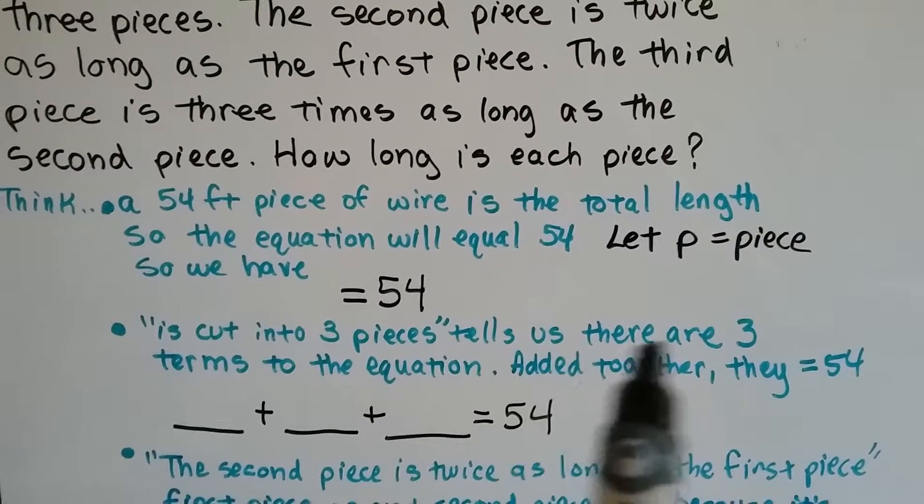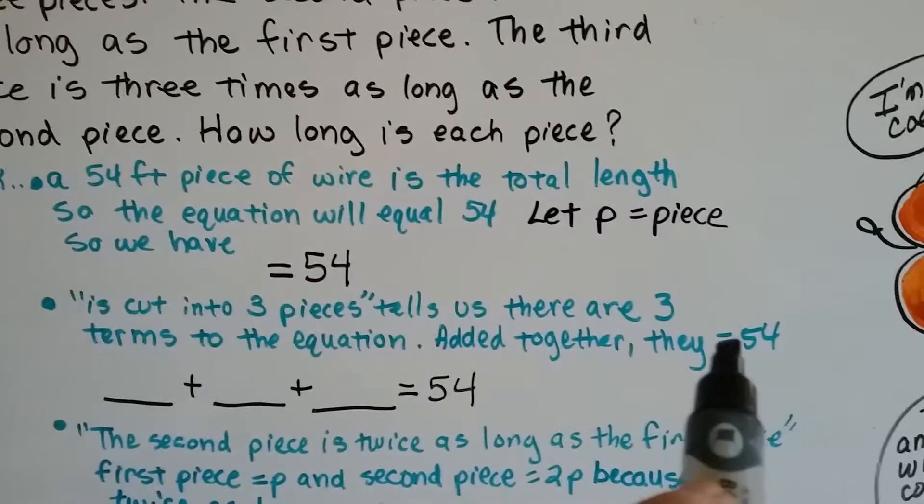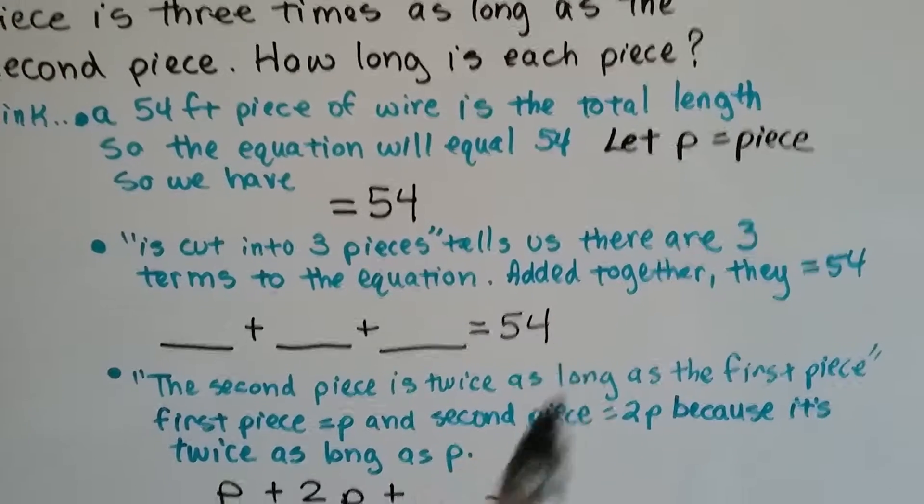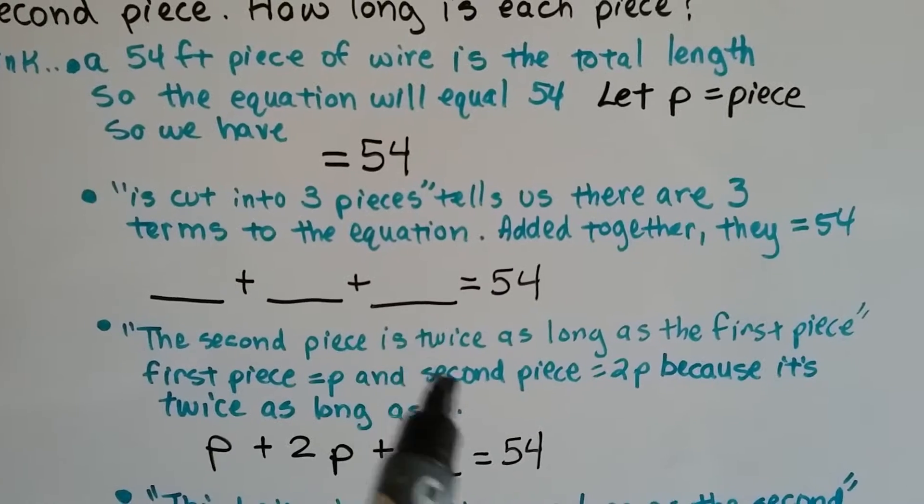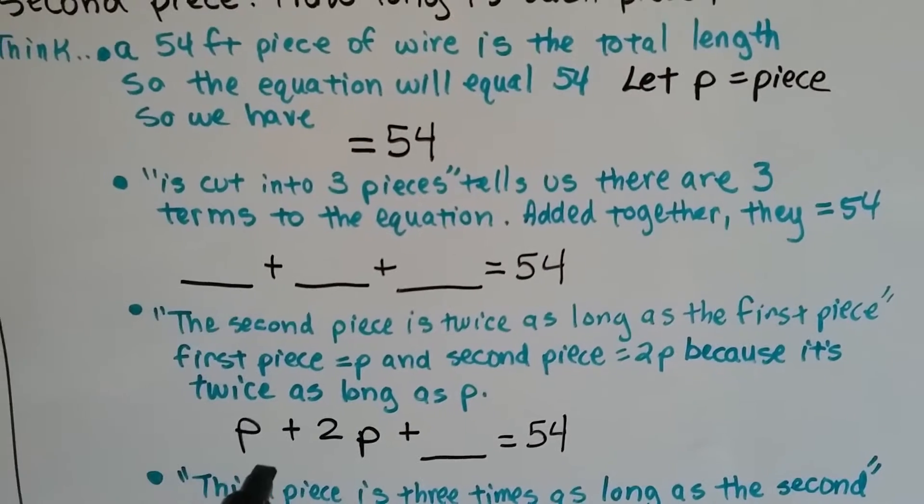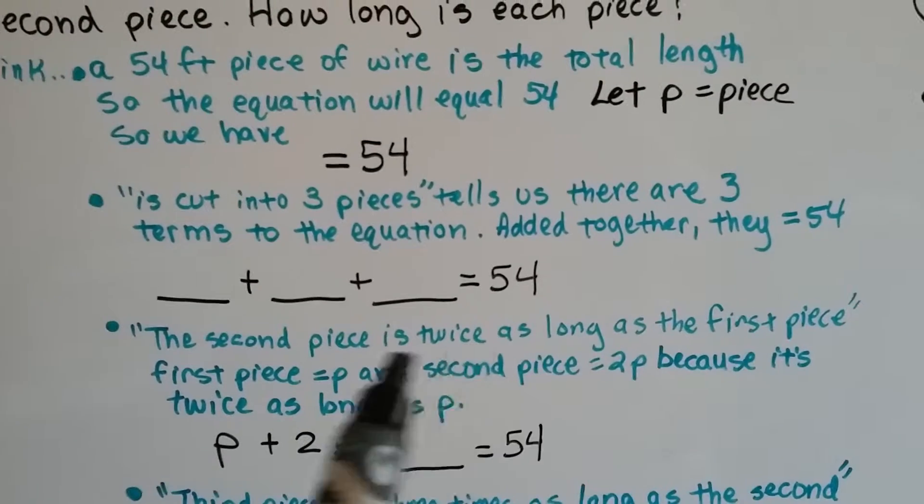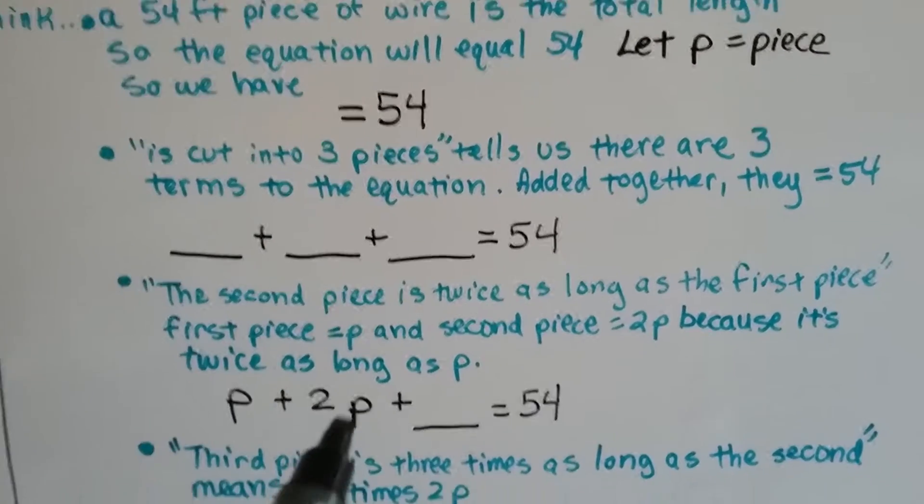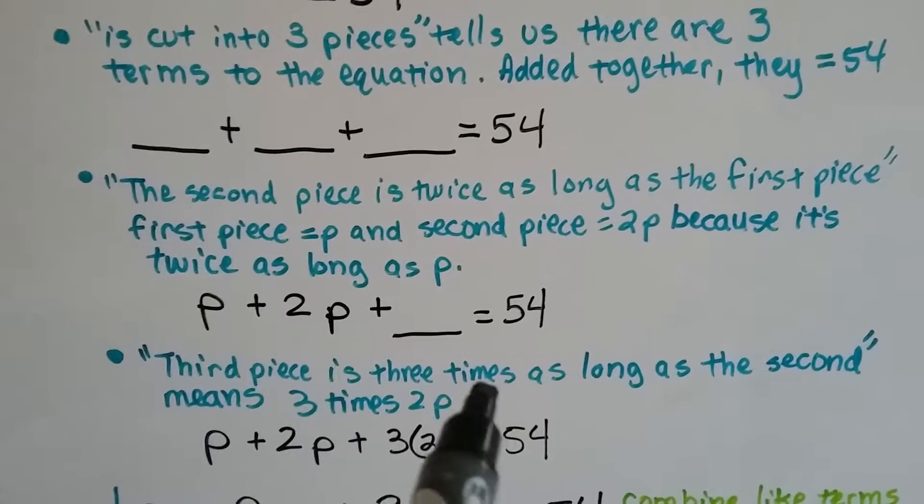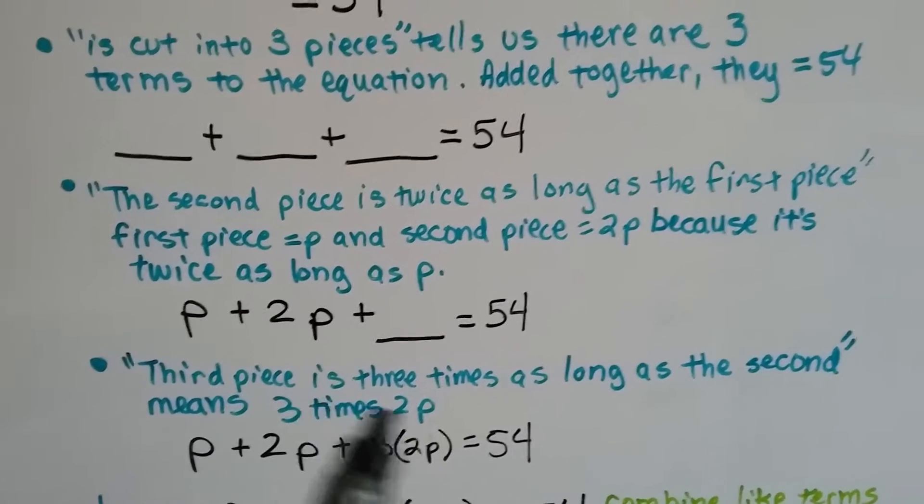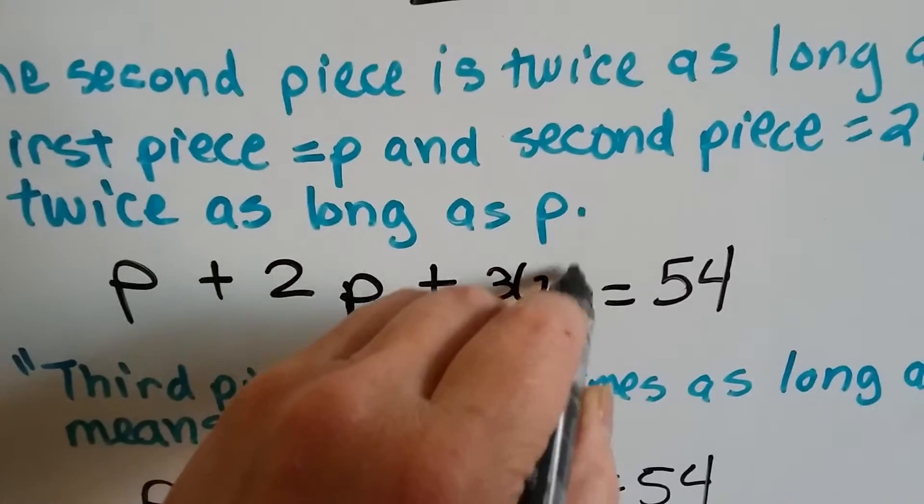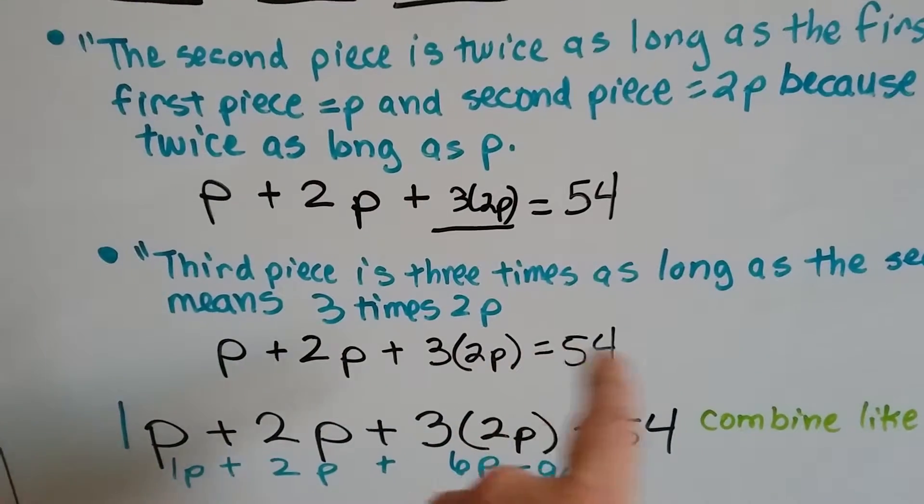Is cut into three pieces tells us there are three terms to the equation. Added together, they're going to equal fifty-four. So we've got something plus something plus something equals fifty-four. The second piece is twice as long as the first piece. P equals piece, so we've got P in the first place, and the second piece is twice as long as it. Twice as much as something means two times something, so we've got P and we've got 2P. The third piece is three times as long as the second. Three times means three, and the second piece is 2P. So our third one is three times the 2P. Now we've got P plus 2P plus three times 2P equals fifty-four.